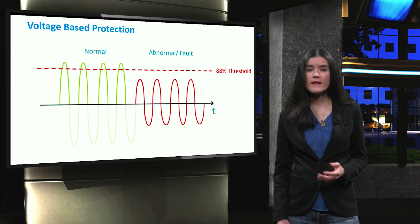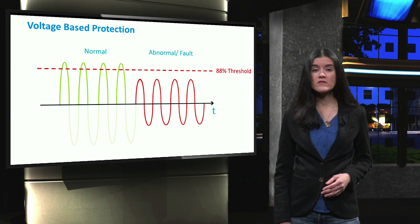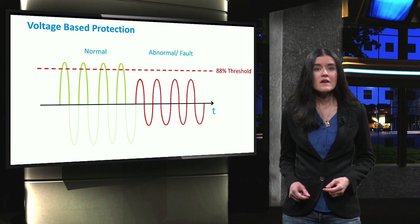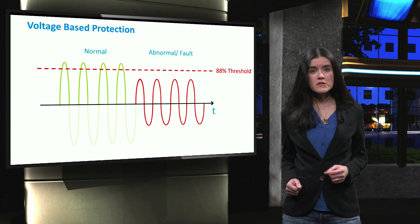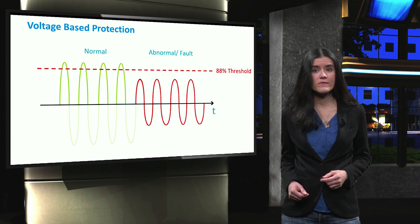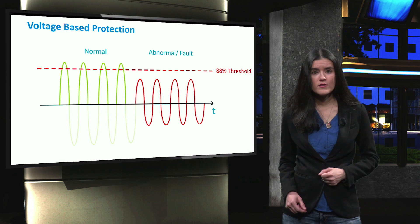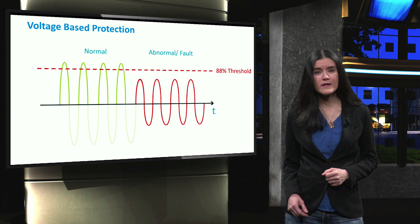However, the voltage in the network can go through several other transient incidents, such as load switching, making the voltage-based methods vulnerable to disturbances. Additionally, these methods cannot provide selective protection.